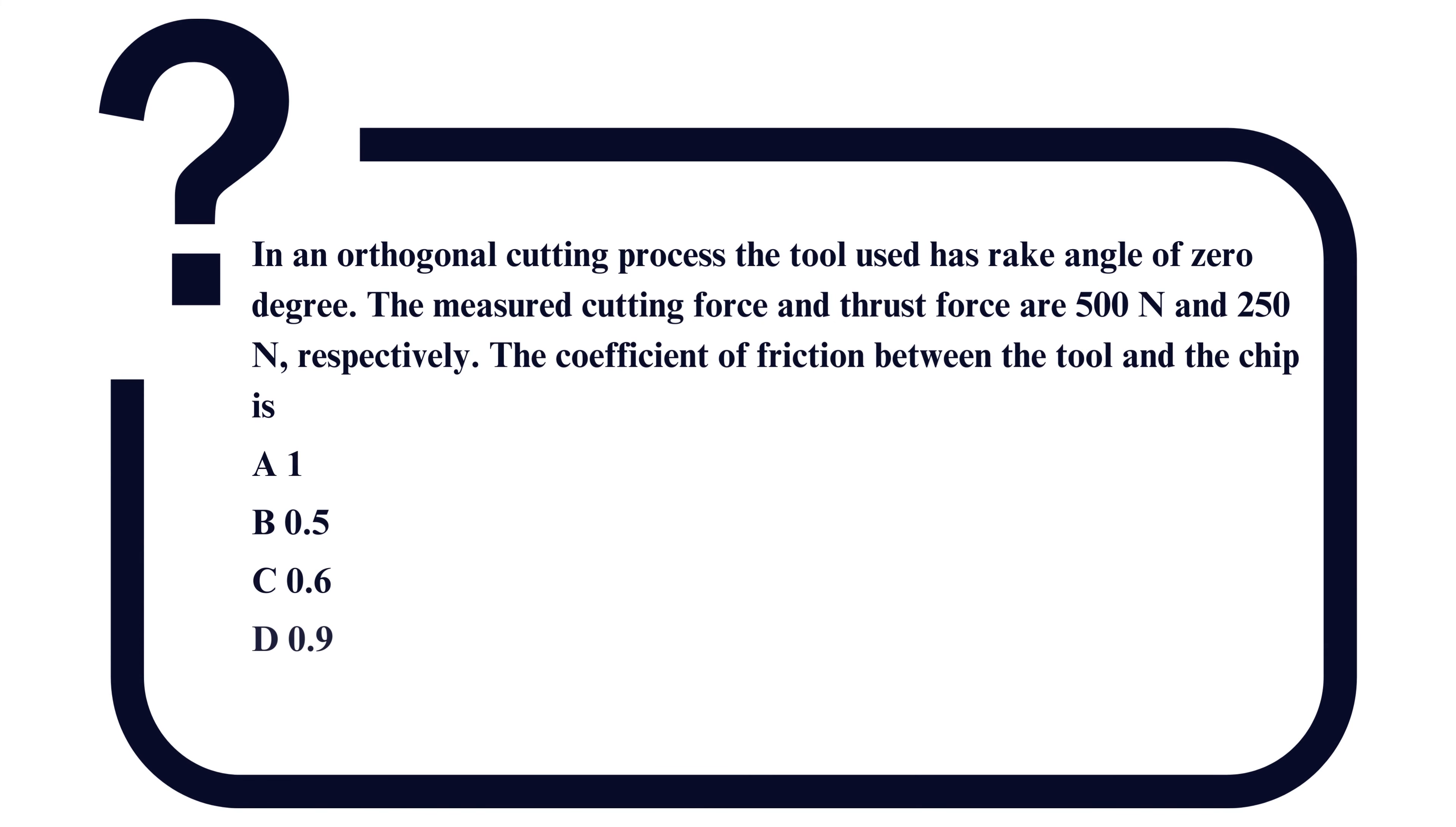Question is, in an orthogonal cutting process, the tool used has a rake angle of zero degrees. The measured cutting force and thrust force are 500 Newton and 250 Newton respectively. The coefficient of friction between the tool and the chip is: option A, 1; option B, 0.5; option C, 0.6; and option D, 0.9.